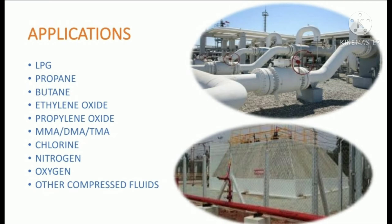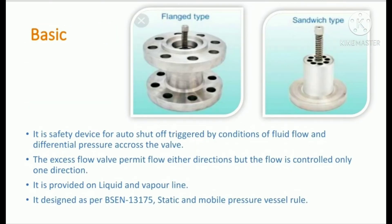It is available as a flanged end type, sandwich type, and screwed type. It is a safety device for automatic shutoff, triggered by the conditions of fluid flow and differential pressure across the valve. The excess flow valve permits flow in either direction, but flow is controlled in only one direction. It is provided on liquid as well as vapor lines, and is designed as per BS EN 13175 and static and mobile pressure rules.